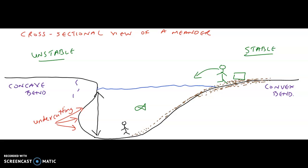Now, there are in fact unique features associated with these areas. This area here is said to be known as a river cliff, also known as a river bluff. River cliffs or river bluffs are associated with the unstable side of a meander, which is technically the concave bend or the concave bank, associated with undercutting of the lower end because of great volume and fast-moving bodies of water, which obviously contribute to erosion.